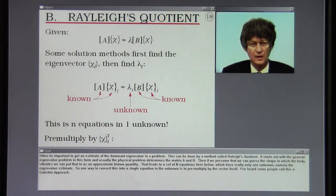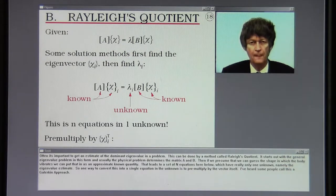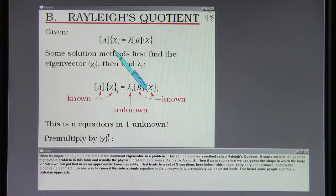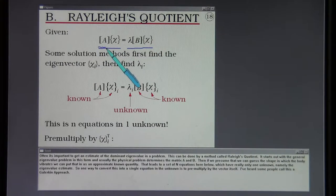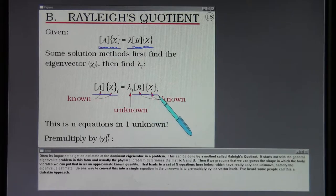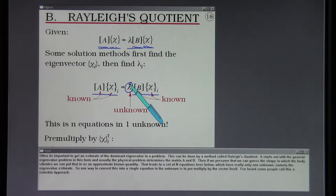Often it's important to get an estimate of the dominant eigenvalue in a problem. This can be done by a method called Rayleigh's Quotient. It starts out with the general eigenvalue problem in this form and usually the physical problem determines the matrix A and B. Then if we presume that we can guess the shape in which the body vibrates, we can put that in as an approximate known quantity. That leads to a set of N equations which have really only one unknown, namely the eigenvalue estimate. So one way to convert this into a single equation in the unknown is to pre-multiply by the vector itself.